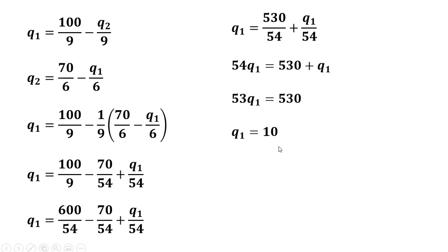Firm 1 will produce 10 units of output. As for firm 2, we'll plug this 10 into firm 2's reaction function, and we see that firm 2 produces also 10 units of output.